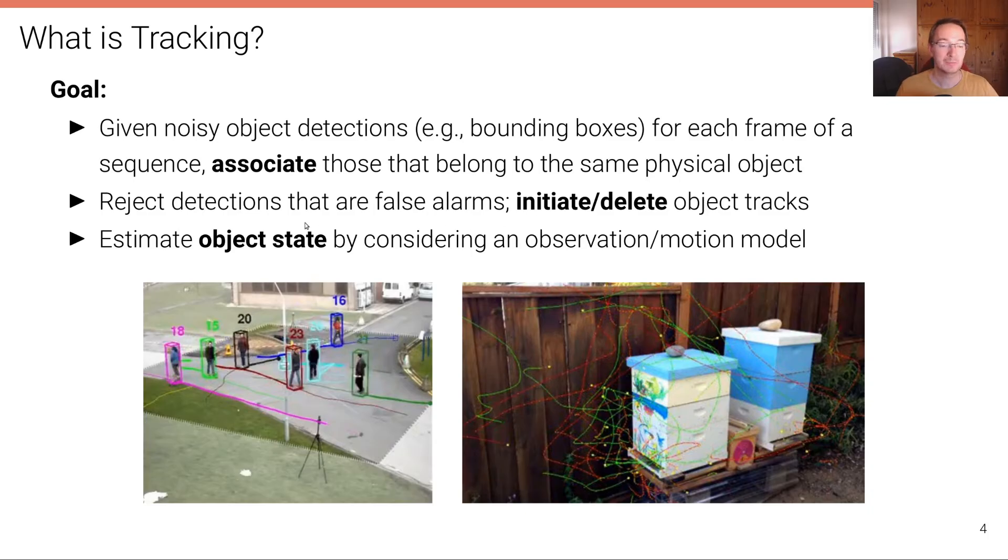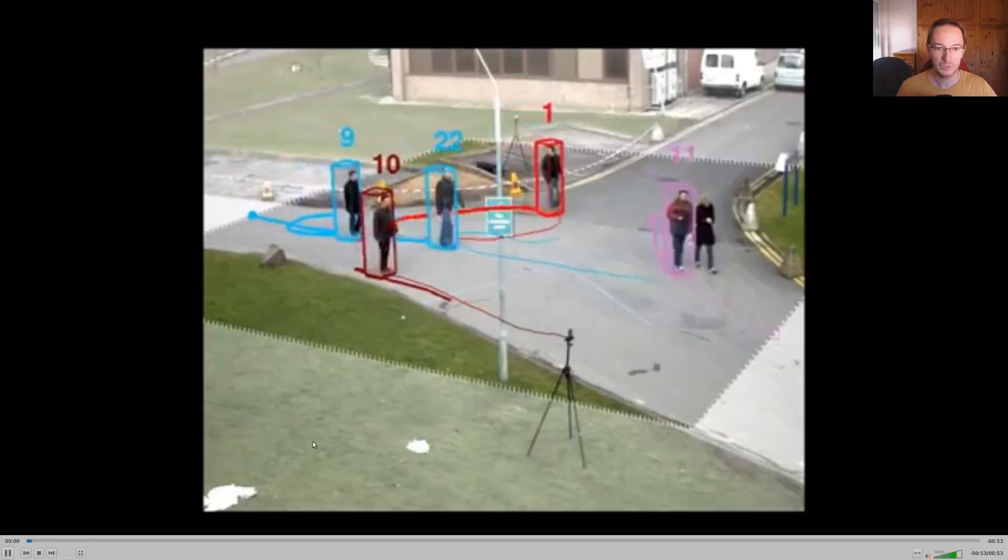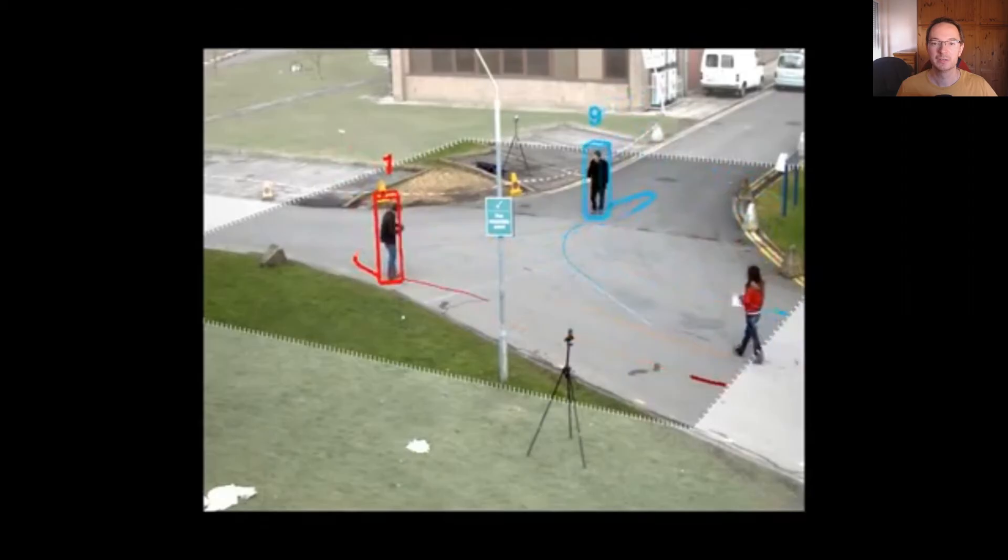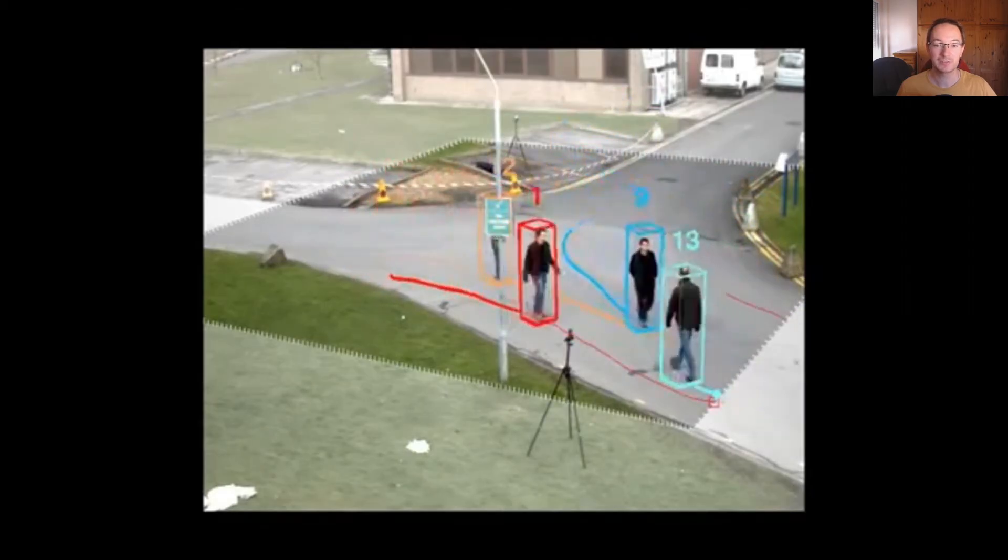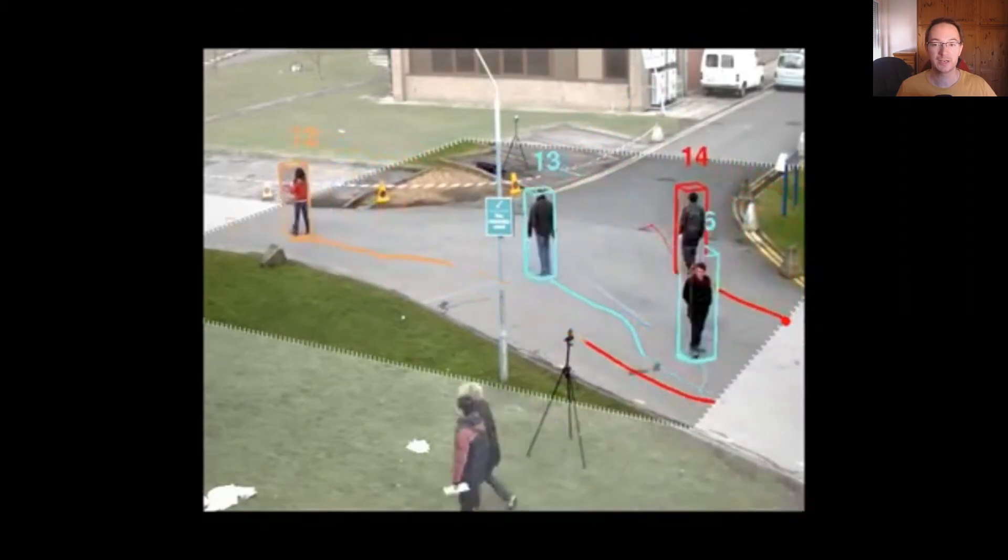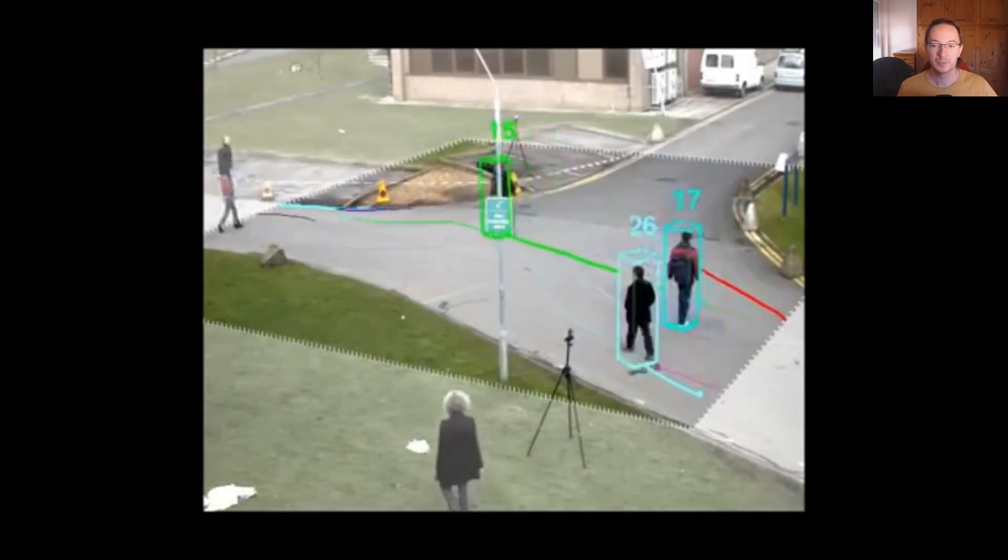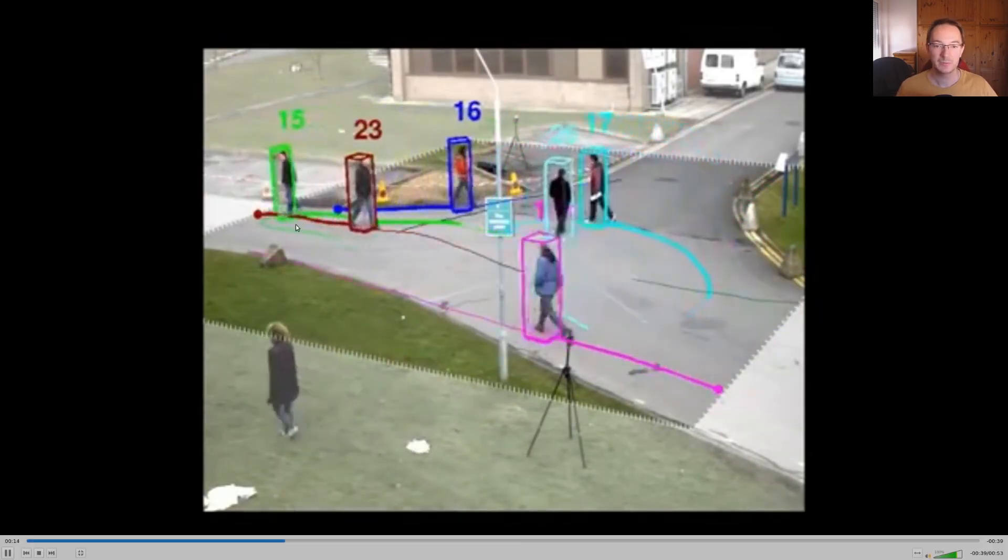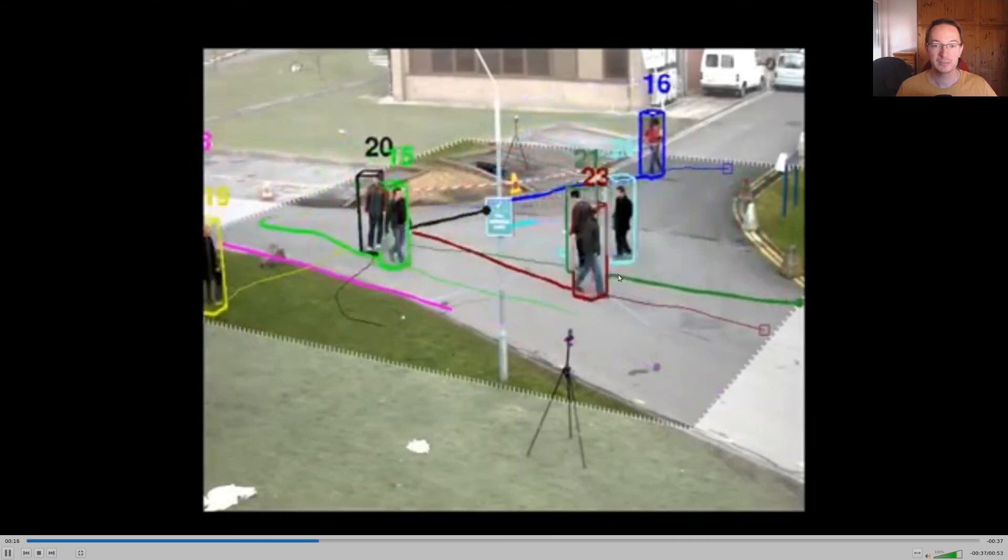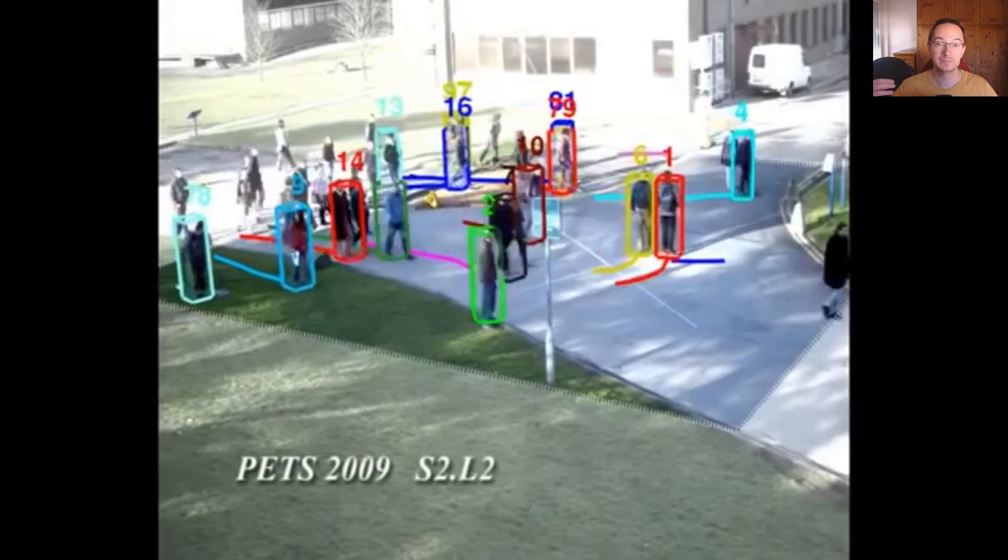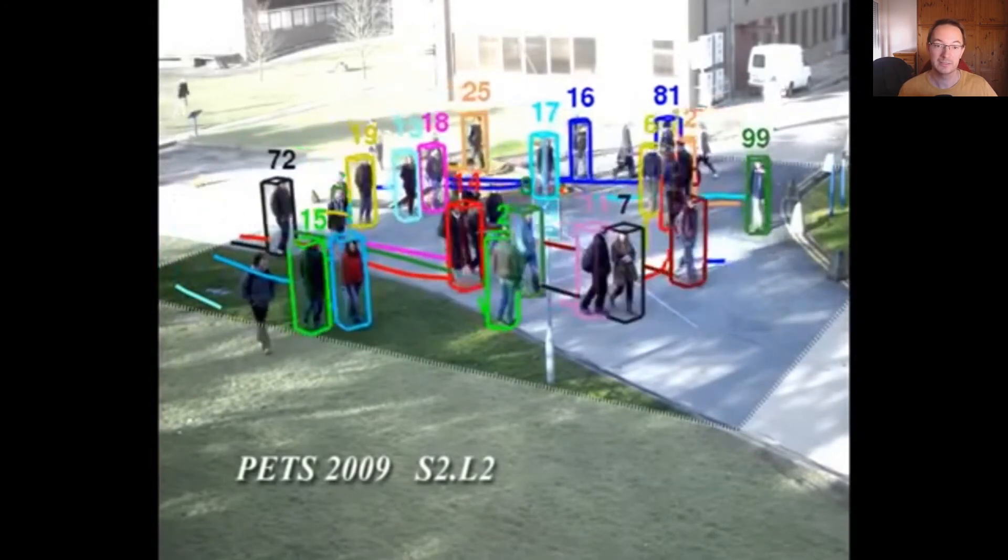On the left for a pedestrian scene with a static camera. And you can see these bounding boxes around the objects that are smoothly tracked. You can also see that in some cases, an object appears in the observation area and the track starts and then some objects, some pedestrians move out of that zone and the object tracks get deleted.